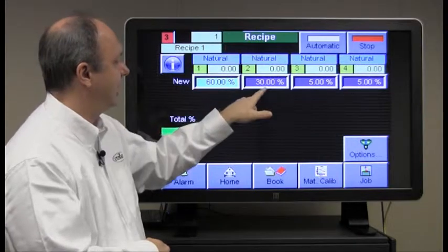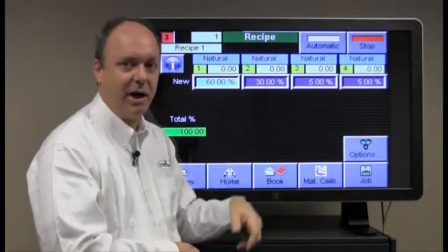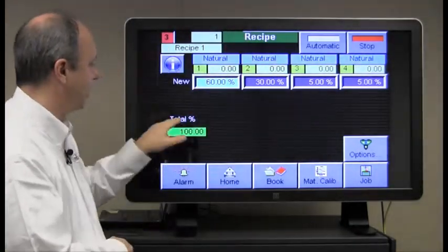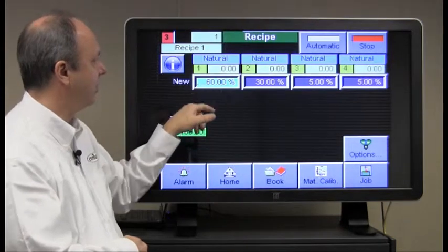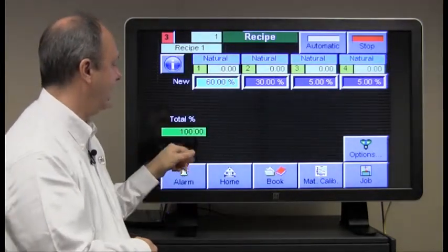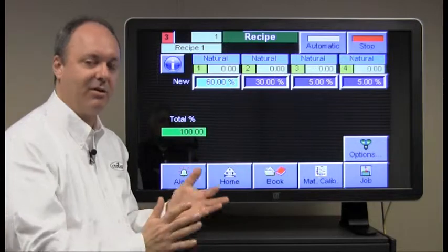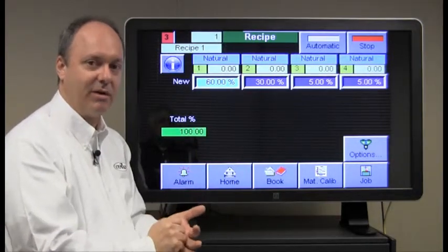I have 60% here, 30, 5 and 5. We have a green light here that's indicating the totals of all the naturals adds to 100. Keep that in mind as we move through this because the naturals always have to add to 100.